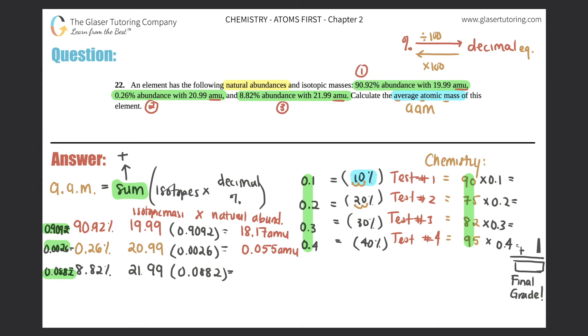And then 21.99 times 0.0882. You get 1.94. How many sig figs should be here? Three. So, 1.94.